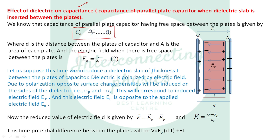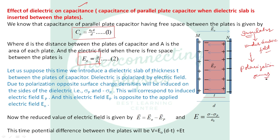What is a dielectric? Dielectric is an insulator. When an insulator is placed under the effect of an electric field, polarization occurs. The molecules of the dielectric or insulating material get stretched — that is, positive and negative charges within the molecules get stretched apart.